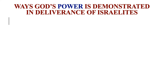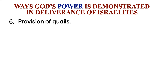Number six, there was also provision of quail for the Israelites to eat. The quail came in large flocks. A quail is a round-bodied bird with a small tail. These were provided to the Israelites, showing that God cared for his people.